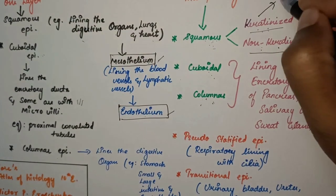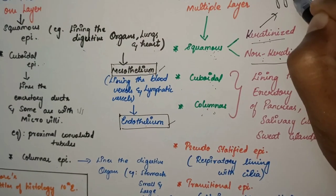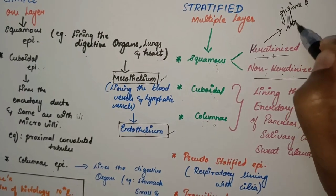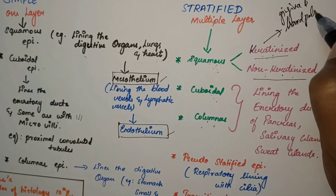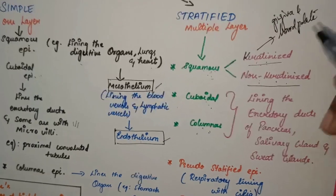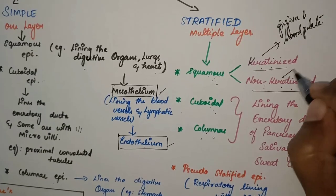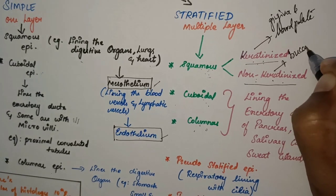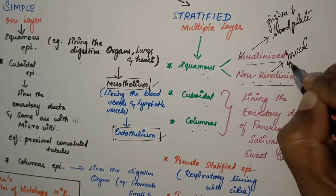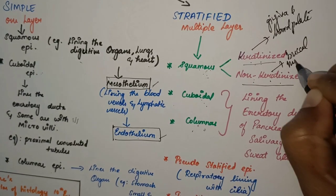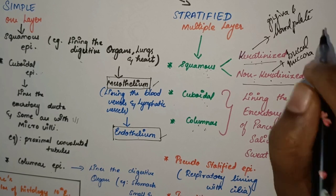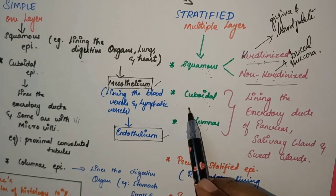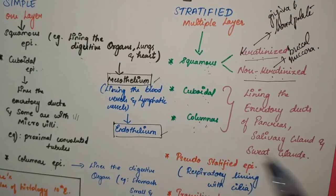To summarize: keratinized epithelium is found in the gingiva and hard palate, while non-keratinized epithelium is found in the buccal mucosa.